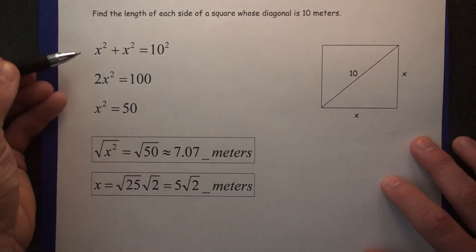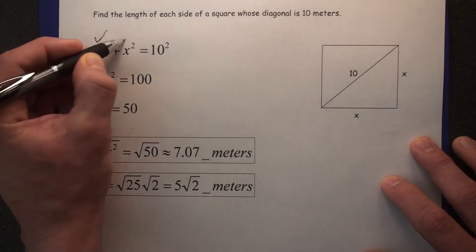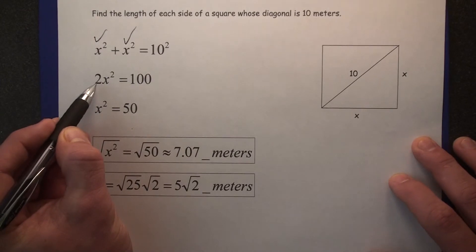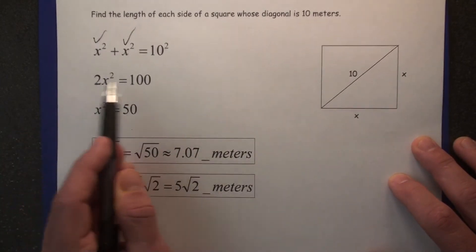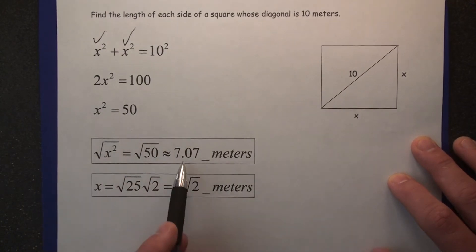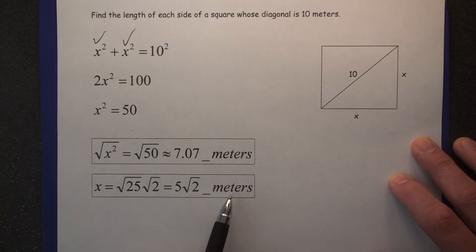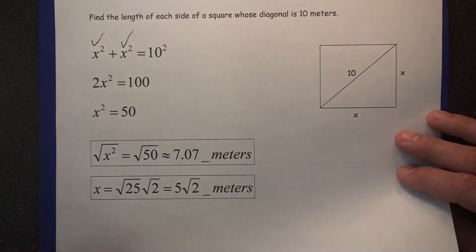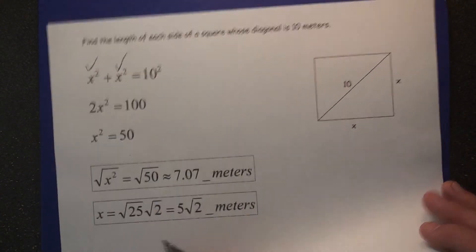Now, here's where things get goofy for people. Add the like terms together. 2x squared. This becomes 100. Divide by 2. Then do the square root of both sides right over here. You get 7.07 meters. Or root 25 root 2, which is 5 root 2. So this would be how we would find the length of each side of a square.